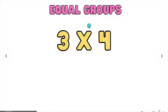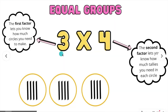Let's go ahead and use a different strategy. We're going to make equal groups. We have the example 3 times 4. 3 is a factor, 4 is a factor. The first factor lets you know how many circles you need to make — 1, 2, 3. The second factor lets you know how many tallies you need in each circle. So the number is 4, so I have 4, 4, 4.